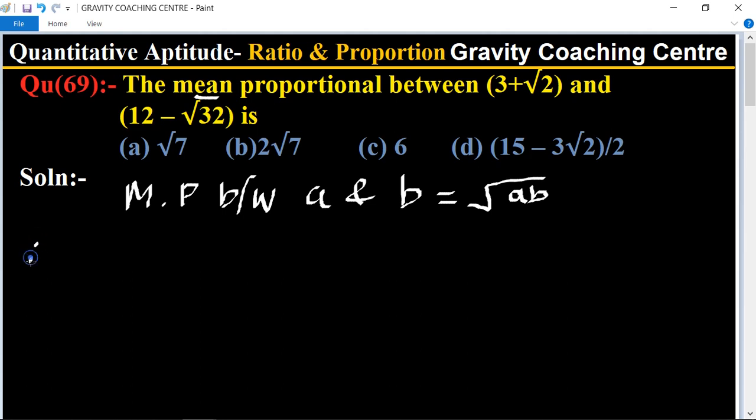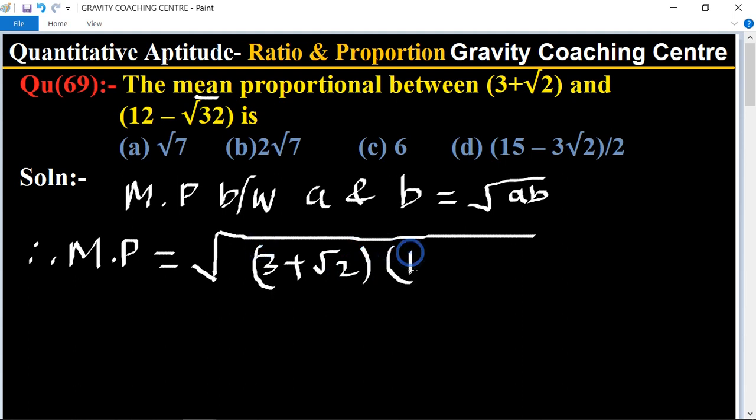Therefore, required mean proportion equals root under 3 plus root 2 into 12 minus root 32.